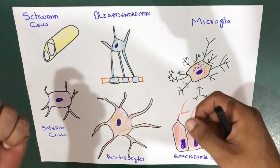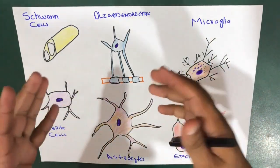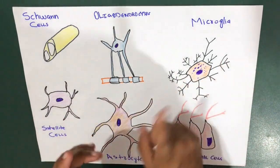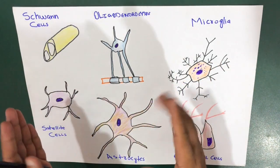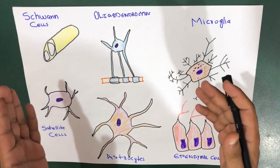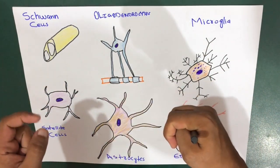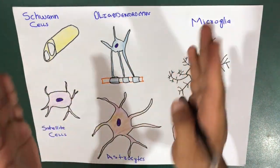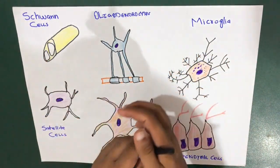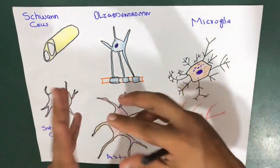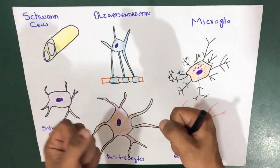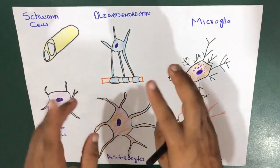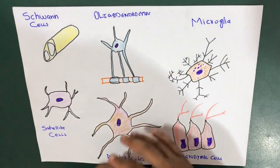The glial cell is the actual supportive cell of the central nervous system. Unlike neurons, glial cells do not conduct electrical impulses — remember that, this is really important. Glial cells never ever conduct electrical impulses. They surround the neurons and provide support and insulation between them.